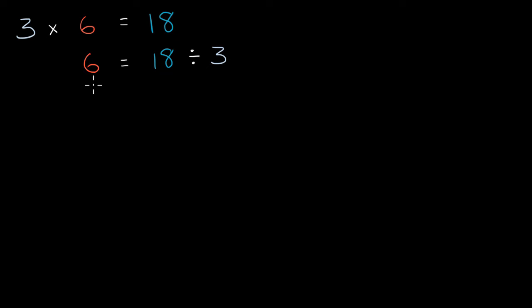You are likely already familiar with the relationship between multiplication and division. For example, we know that three times six is equal to 18. But another way to express that same relationship is to say, if three times six is 18, then if I were to start with 18 and divide it by three, that would be equal to six. Or you could say that 18 divided by six is equal to three.